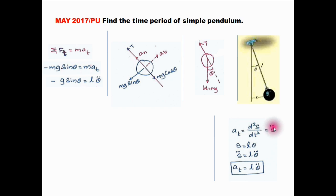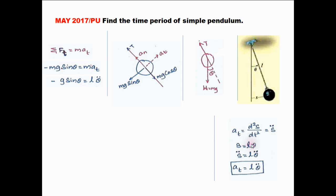From the diagram, the arc length s equals radius times theta, where radius is L, so s equals L·theta. Differentiating twice, we get s double dot equal to L·theta double dot. So At equals L·theta double dot.